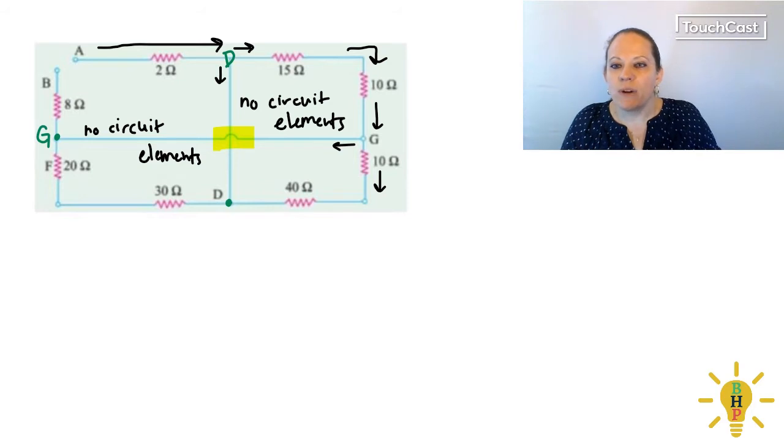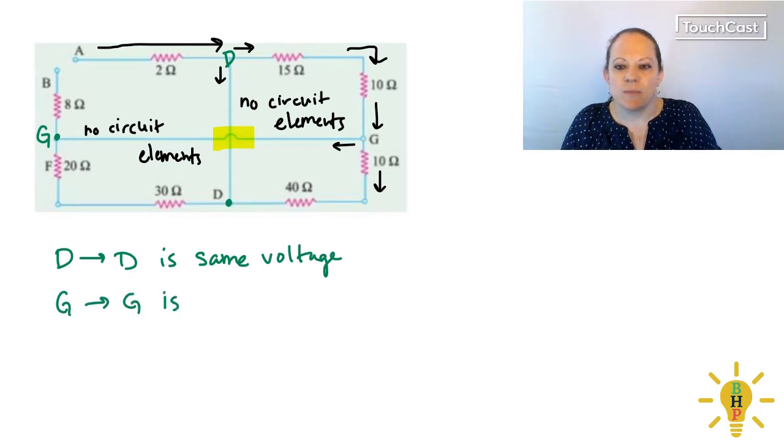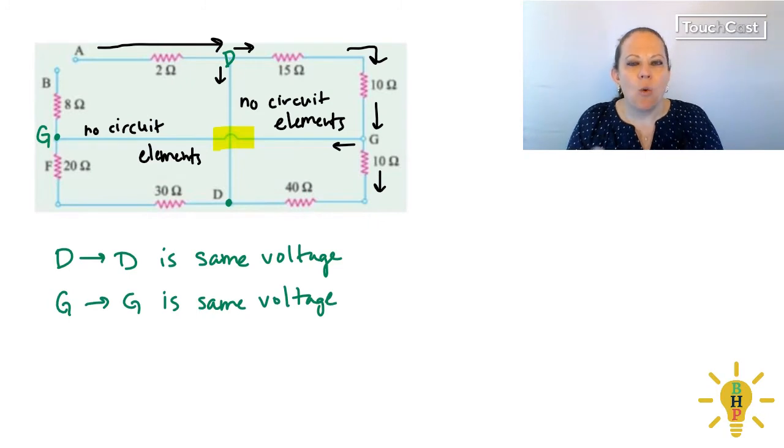And so what we see is D to D is going to be the same voltage, which means we will end up coloring it the same color on our next slide. And then likewise, G to G is going to be the same voltage. Because again, what we want to look at is what points in the circuit are actually at the same voltage, because then when we can find the same voltage differences, then we know that it's a parallel connection.